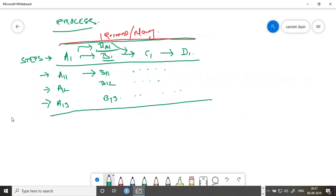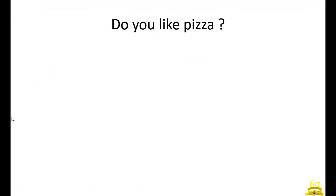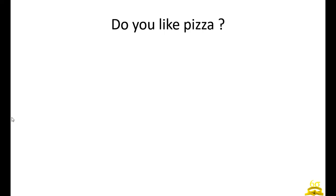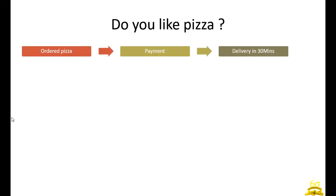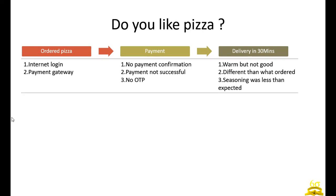Now let's take a real example to understand the purpose of Six Sigma. Suppose you're ordering a pizza. If you divide the whole pizza purchase and delivery process, you can break it into three parts: ordering the pizza, payment, and delivery within 30 minutes. Within these, what are the issues you face normally? There can be internet login issues, payment gateway issues, no payment confirmation, payment not successful, or not receiving the OTP.